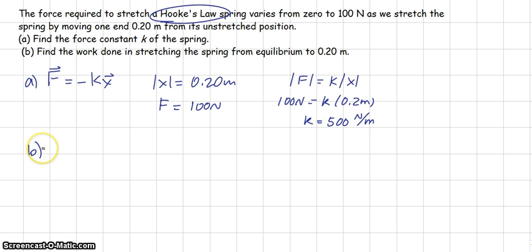Part B is finding the work done in stretching the spring from equilibrium, so x equals 0 to x equals 0.2 meters. Because we have a variable force, that means we must integrate. Work equals the integral of f dx. So the work done, this sort of implies the work done by an outside force.